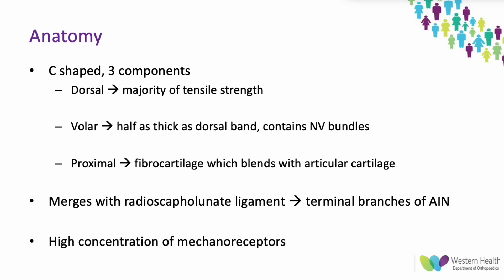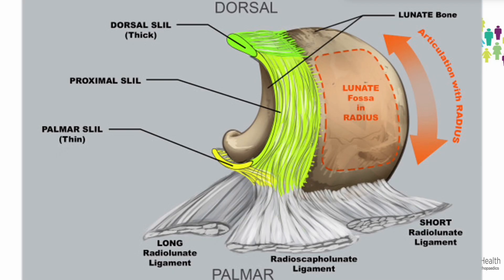The proximal component is a very thin component, mainly fibrocartilage, which blends with the articular cartilage. The scapholunate ligament merges with the radioscaphoid lunate ligament and is supplied by terminal branches of the AIN. It has a high concentration of mechanoreceptors, important for proprioception and dynamic stability, similar to those found in the ACL.